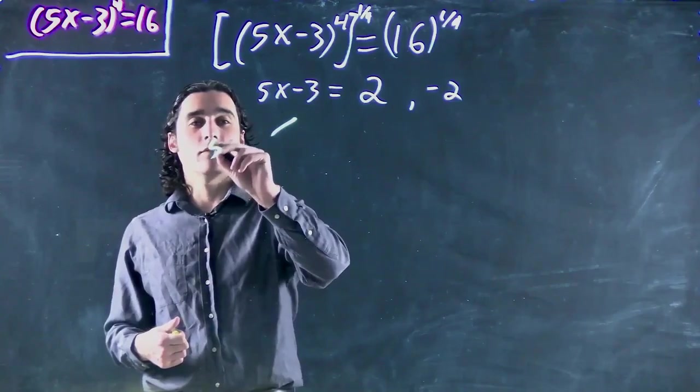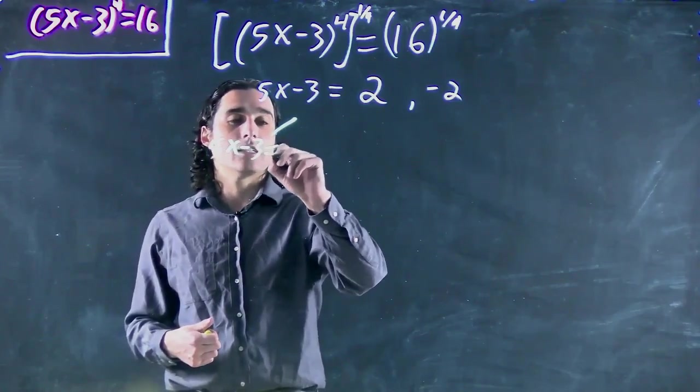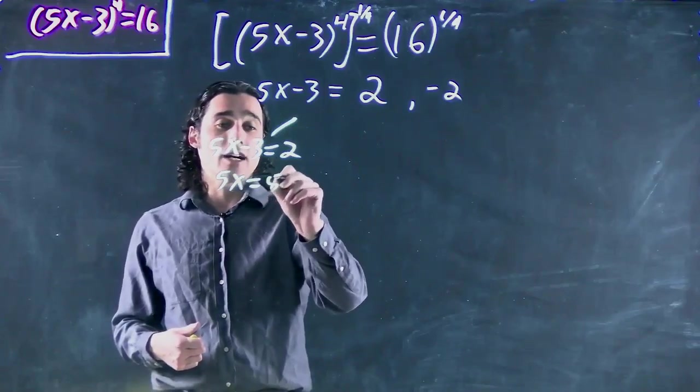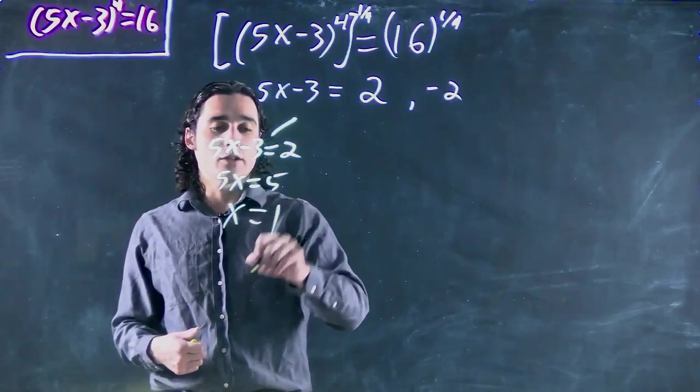So first we can solve 5x minus 3 equals 2, or in other words 5x equals 5 and x therefore equals 1.